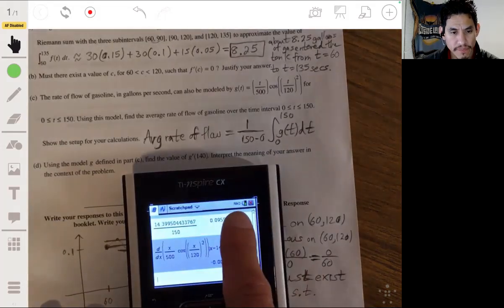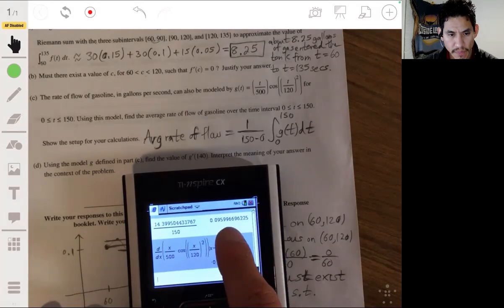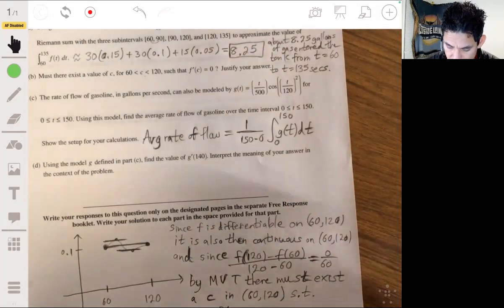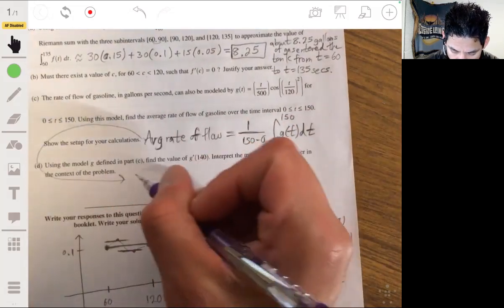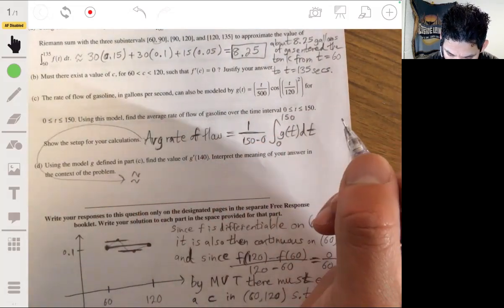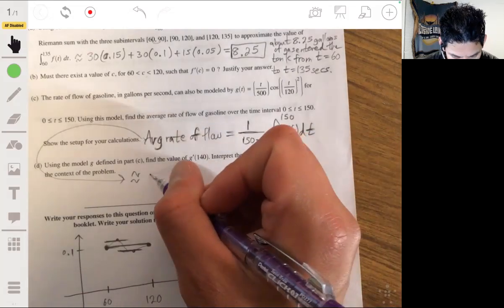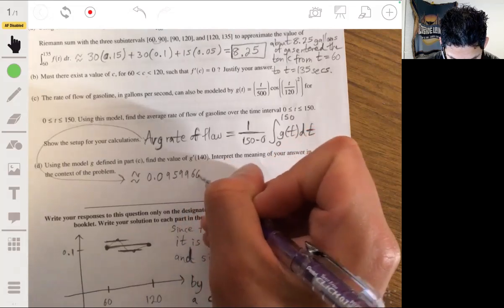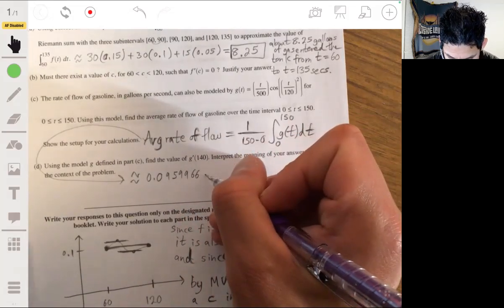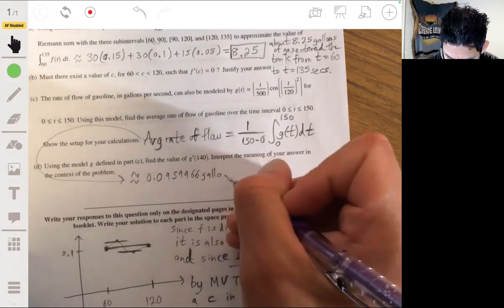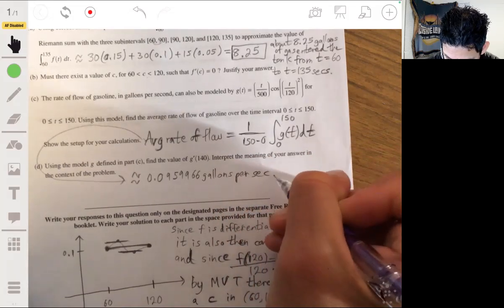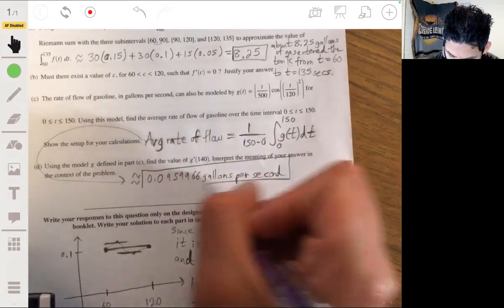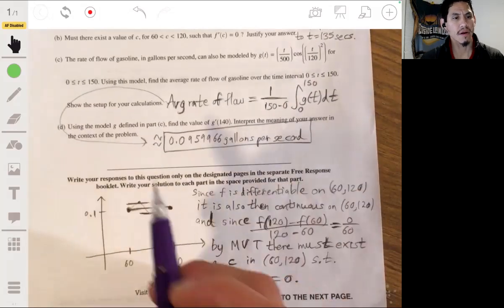So to save time, I did it up here earlier. Entered it in here. Got about 0.0959966 gallons per second.